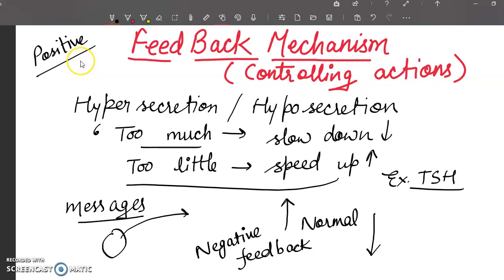For negative feedback mechanism with reference to TSH hormone level, that is thyroid stimulating hormone, it is negatively regulated through hypothalamus, anterior pituitary, and thyroid gland.